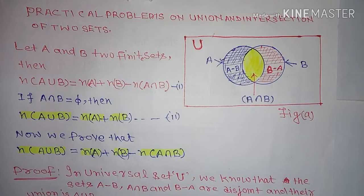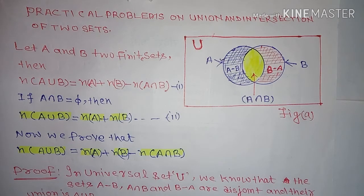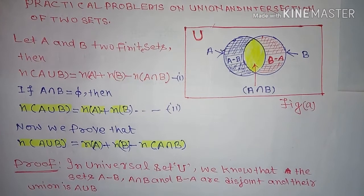Now, if A intersection B is equal to the null set — meaning there is no common element in A and B — then the equation becomes: n(A union B) is equal to number of elements in set A plus number of elements in set B.